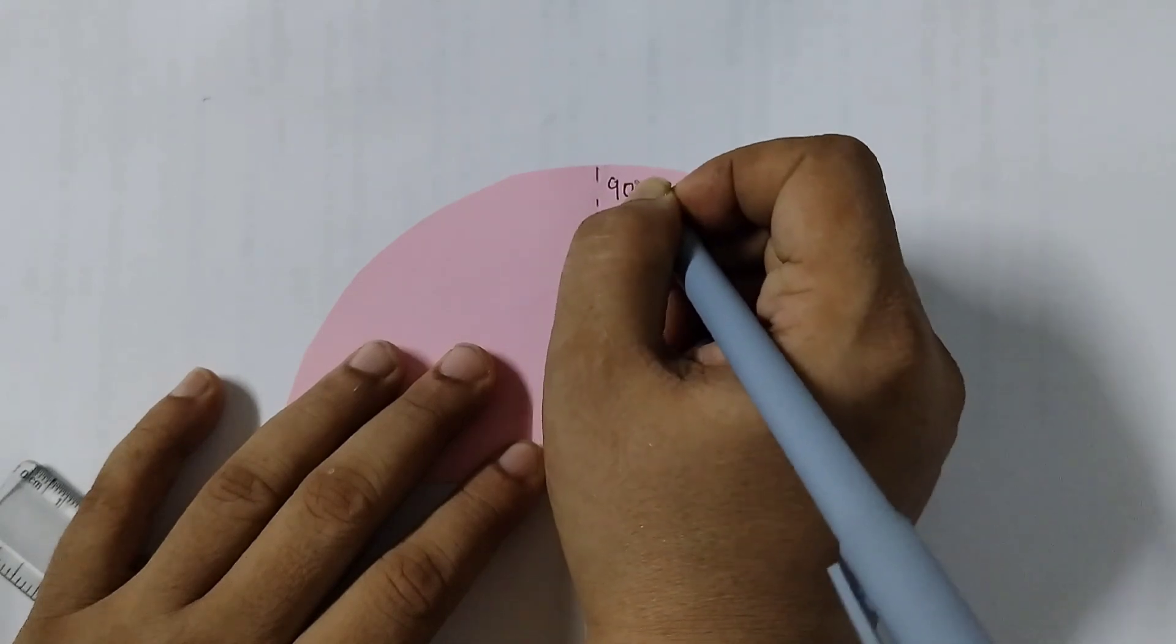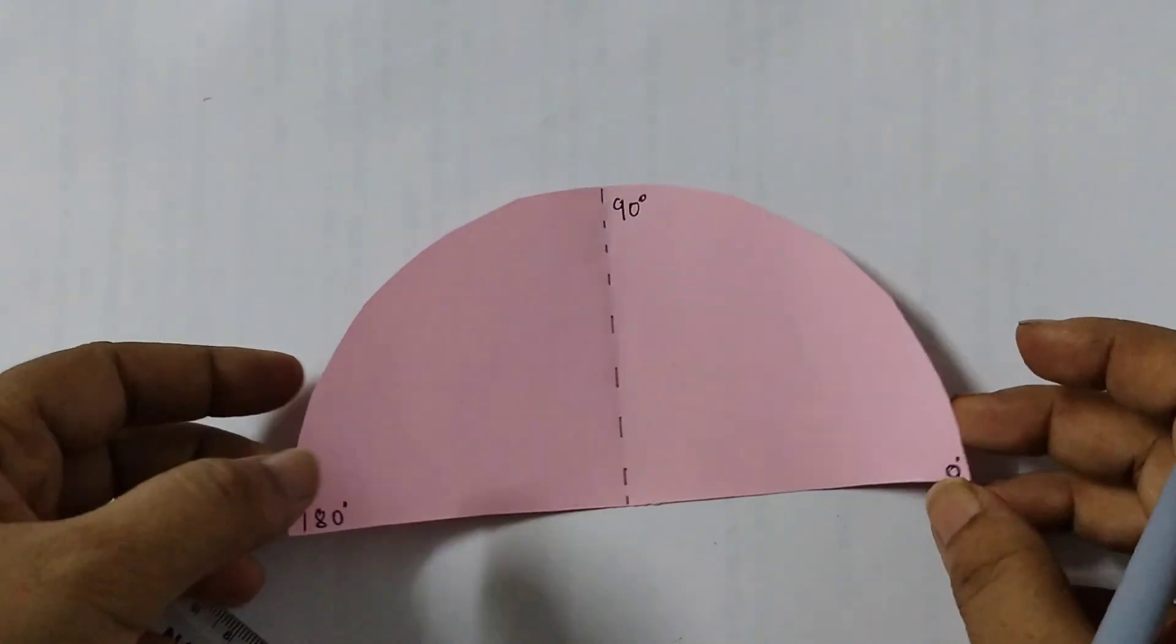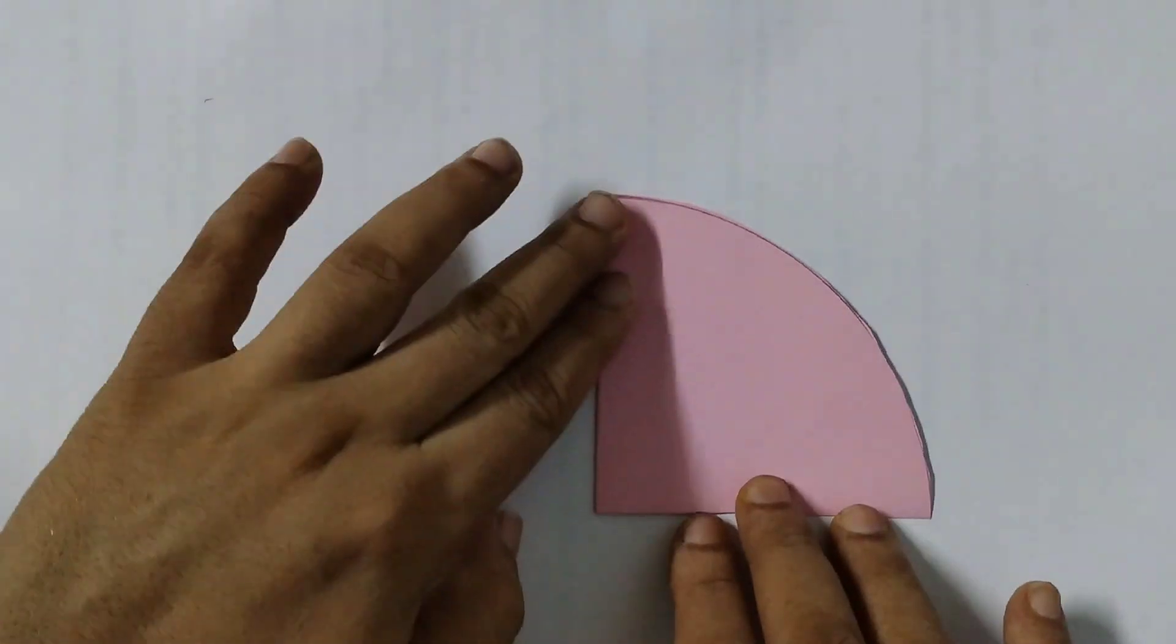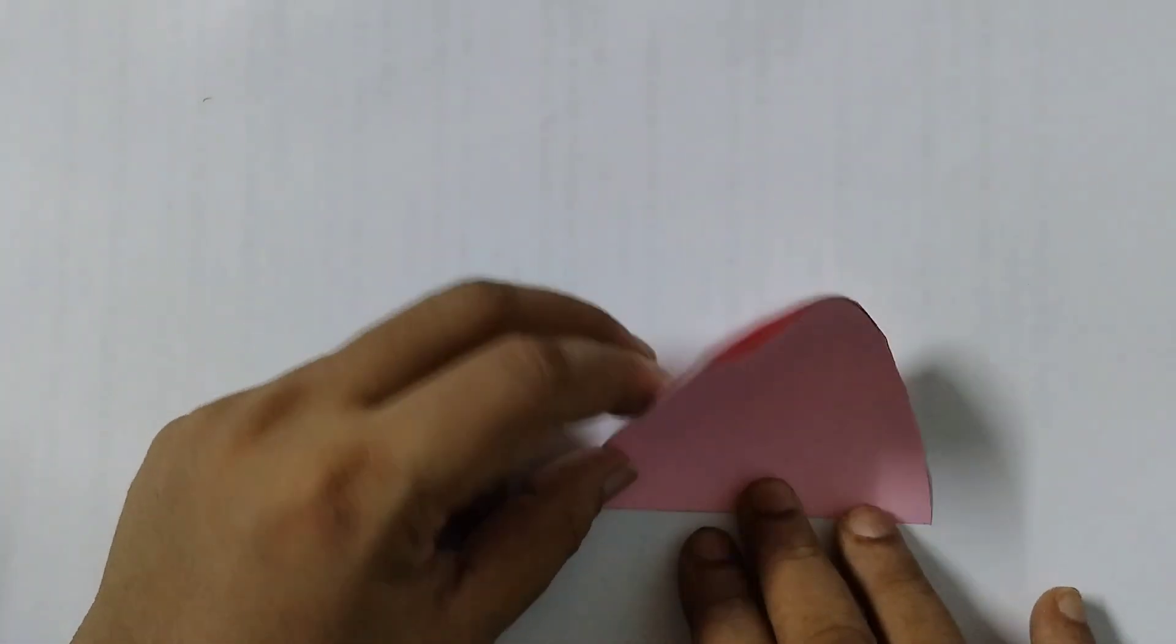Step number four: we need to fold the sheet again. So this is giving me a 90 degrees angle. We will fold it again like this.